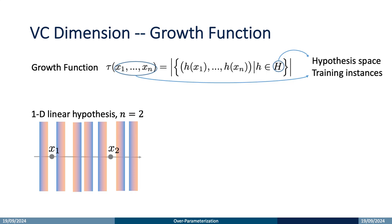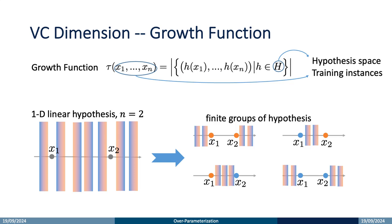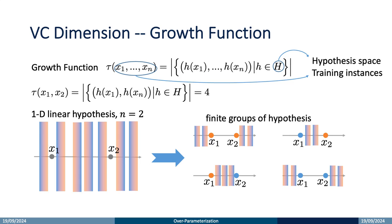There are infinitely many hypotheses that could position the 1D classifier to separate two training instances, x1 and x2, into the blue class and the orange class. However, these parameter sets can be grouped into four possible configurations: classifying both points as orange; classifying the left point as orange and the right as blue; classifying the left as blue and the right as orange; and classifying both as blue. Thus, the growth function tau for points x1 and x2 is 4.